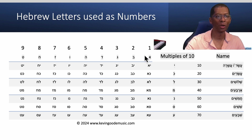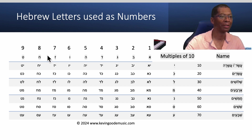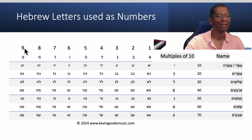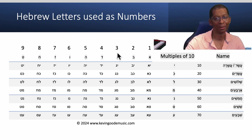Aleph is one, Bet is two, Gimel three, Dalet four, He five, Vav six, Zayn seven, Chet eight, and Tet is nine. And then: Achat, Shtaym, Shalosh, Arba, Chamesh, Shesh, Sheva, Shemoneh, and Tesha.